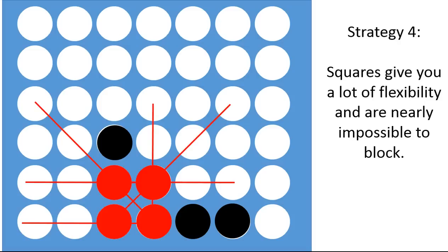So think about this square here. Look at all the options that red has opened up by having that square. Red will be able to force the black piece to go pretty much wherever they want because they have that square. It's a powerful move. It's a good move if you can get a square set up. It's a really great thing to have in a Connect Four game.